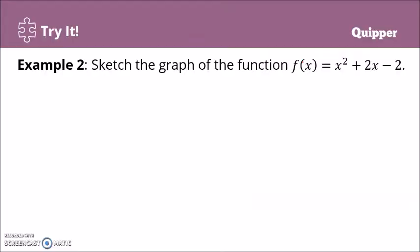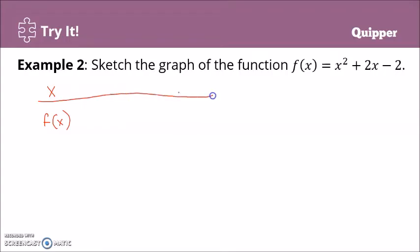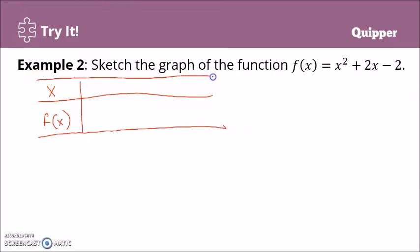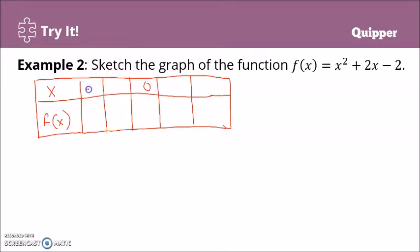Let's have another example. Let's sketch the graph of the function f(x) = x squared plus 2x minus 2. What is useful to sketch the graph is the table of values. We assign values for x and then we solve for f(x). Let's assign at least 5 values for x — 2 negative numbers, 0, and 2 positive numbers: negative 2, negative 1, 0, positive 1, and 2.